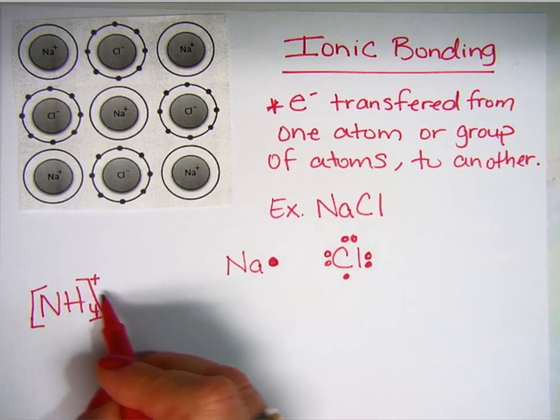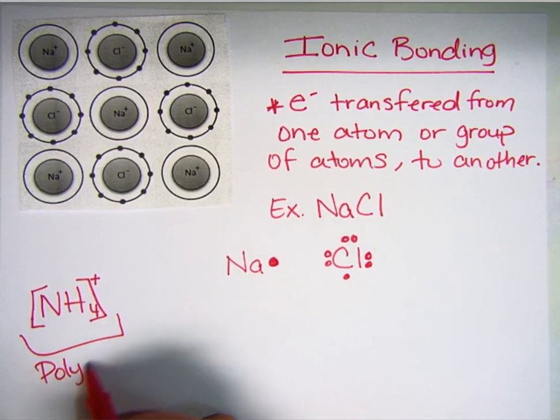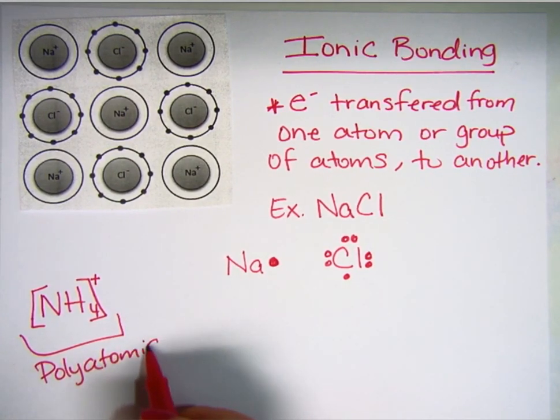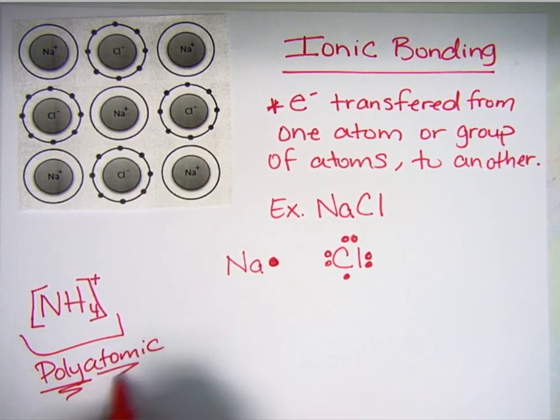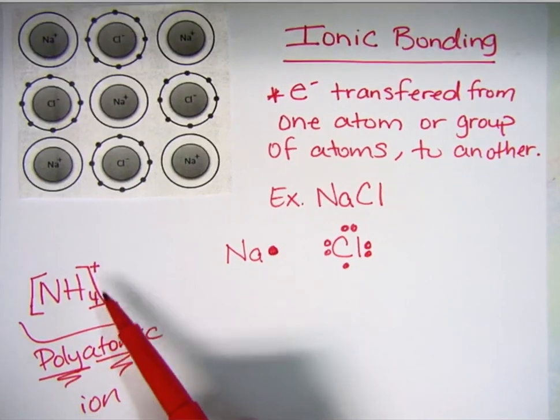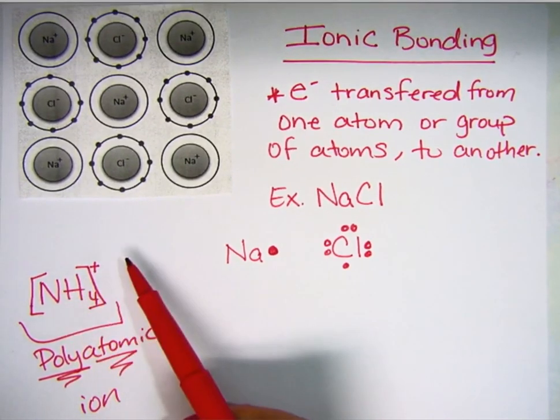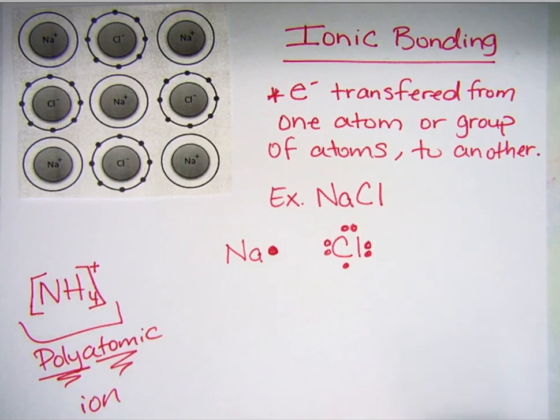This is called polyatomic because poly means more than one, atom means atoms, and then ion means it has charge. So more than one atom having a charge. These atoms collectively have a positive one charge.